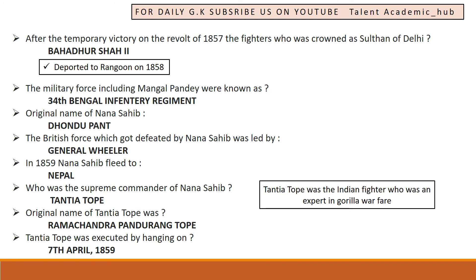After the temporary victory of the Revolt of 1857, the leader who was crowned as Sultan of Delhi was Bahadur Shah II. After the war, he was deported to Rangoon in 1858.